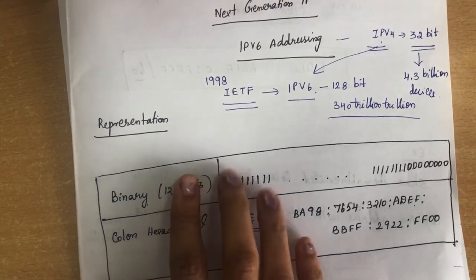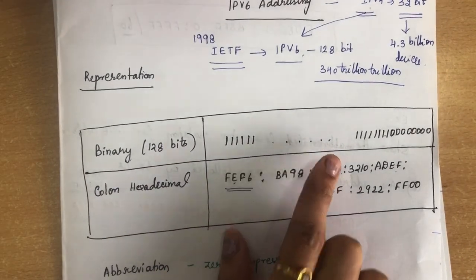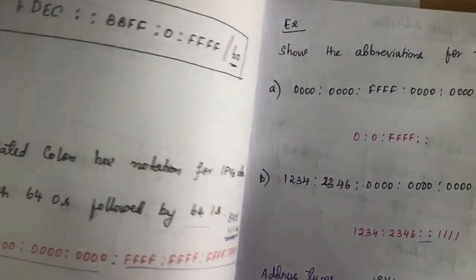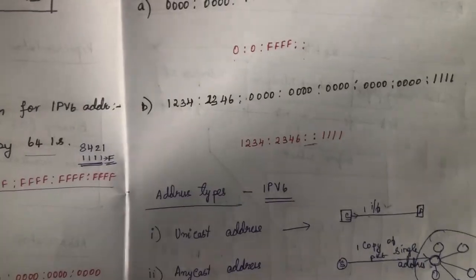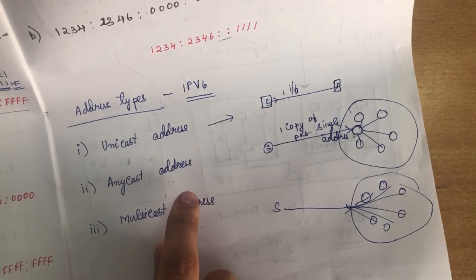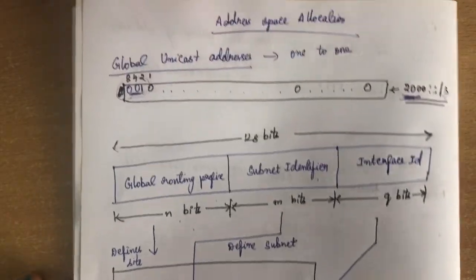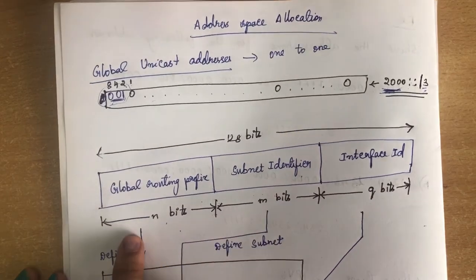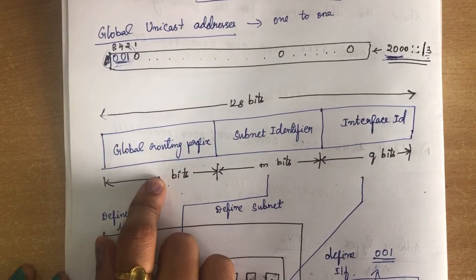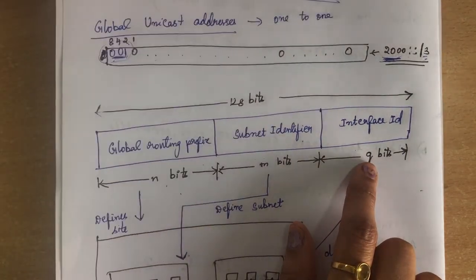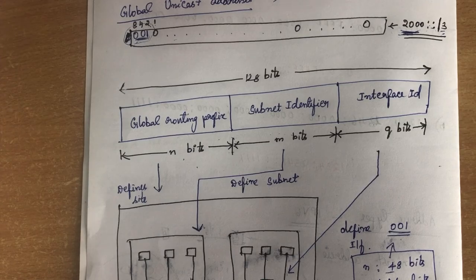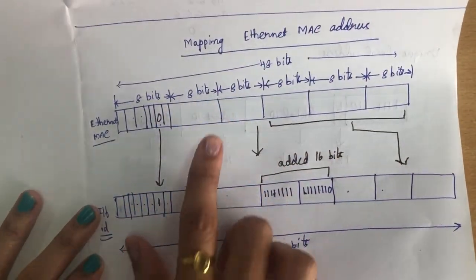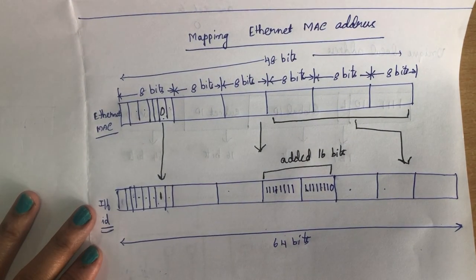In this video we have seen what IPv6 addressing is, how it is represented in binary or hexadecimal form, how it is compressed using zero compression, how it can be represented in classless addressing with slash notation, the three addressing types — unicast, anycast, and multicast — how the address space is divided into global routing prefix (48 bits), subnet (16 bits), and interface (64 bits), and finally how an Ethernet MAC address can be mapped from 48 bits to a 64-bit IPv6 interface identifier.